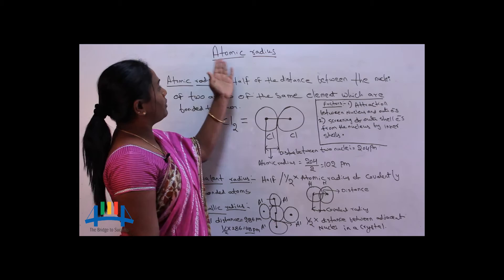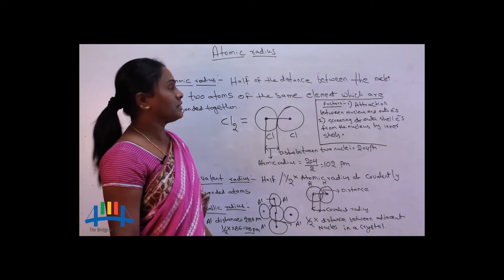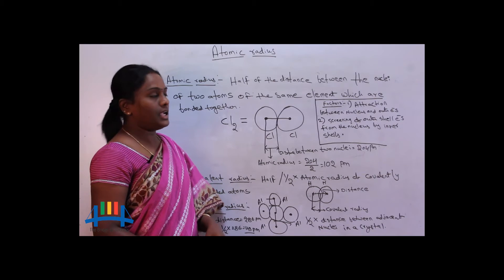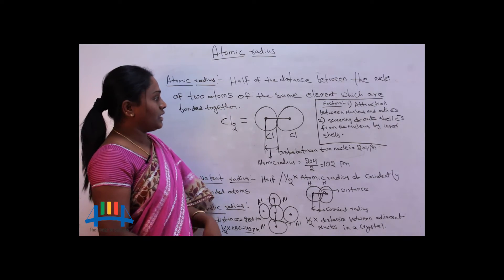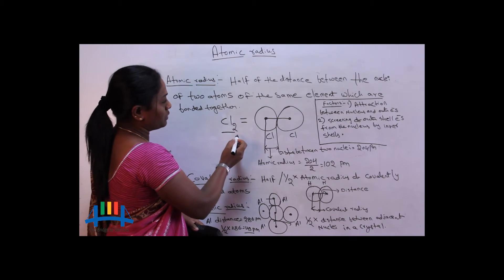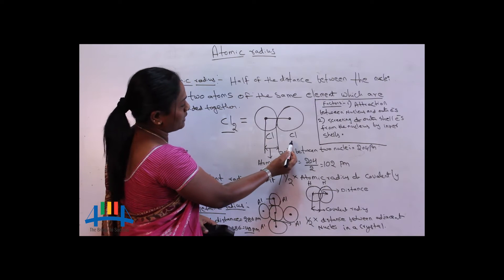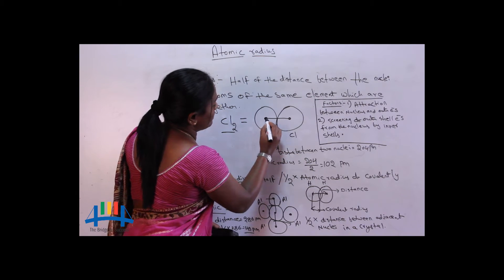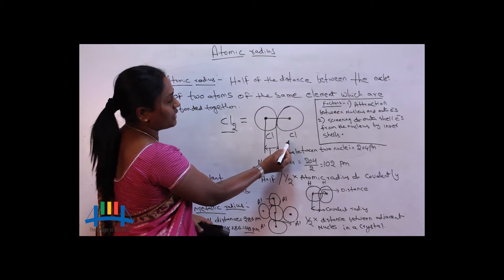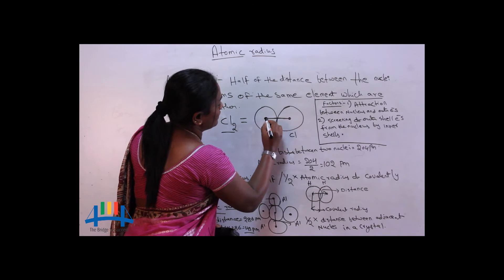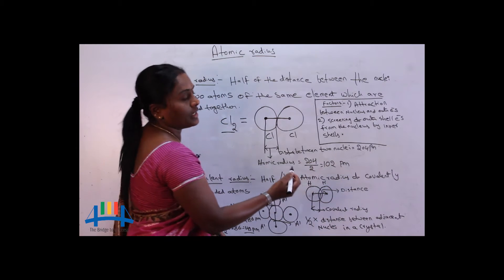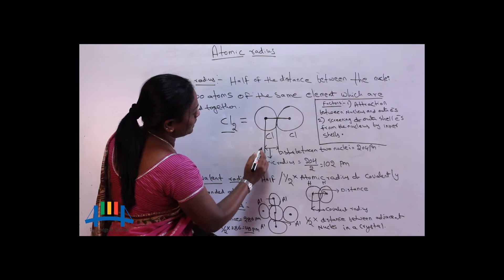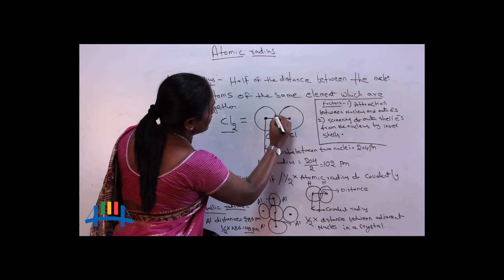Hello everyone, today we will be learning about atomic radius and its types. Atomic radius means it is half of the distance between two nuclei of two atoms which are bonded together. Let's take one example: chlorine, Cl₂. This is one chlorine atom and this is one more chlorine atom; these two are bonded together through a covalent bond. This is the nucleus of one chlorine atom and the nucleus of another chlorine atom, and this is the distance between the two nuclei. Atomic radius means half of that distance.